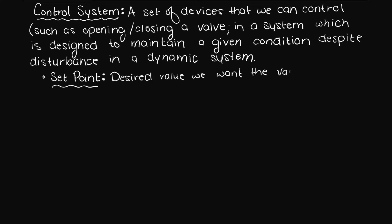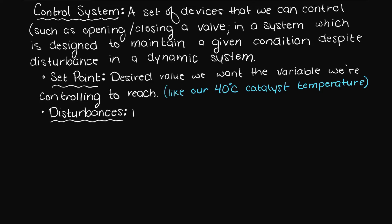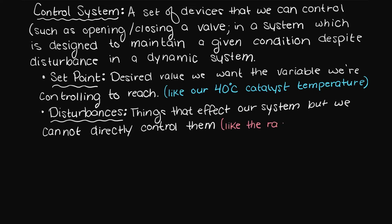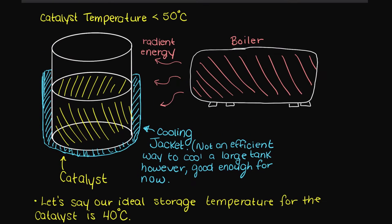The set point is the condition that we want our desired variable to reach. So in our previous example, that is our 40 degrees C tank temperature. Disturbances are things that affect our system, but we cannot control them directly within our system. So this would be like the heat radiating from the boiler.